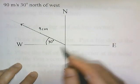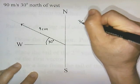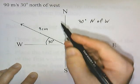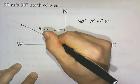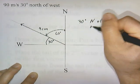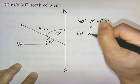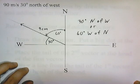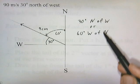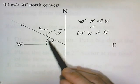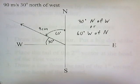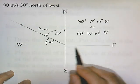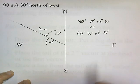This vector is pointing 30 degrees north of west, and it's also 60 degrees to the west of north — or 60 degrees to the left of north. So 30 degrees north of west can be expressed as 60 degrees west of north, because the angle between the west axis and the north axis is 90 degrees, and 30 plus 60 gives 90 degrees. That's how you draw diagonal vectors when they give you an angle like 30 degrees north of west or 20 degrees south of east.